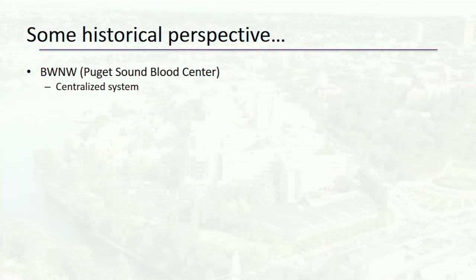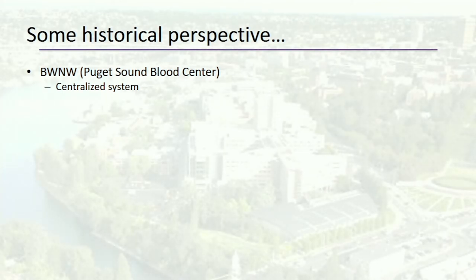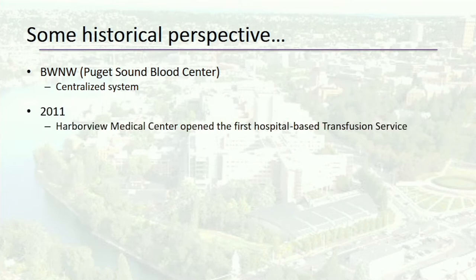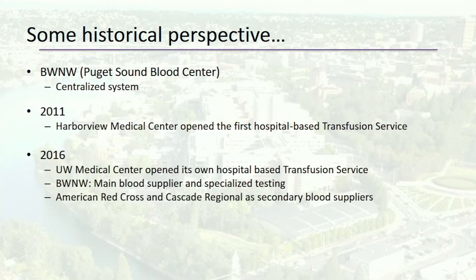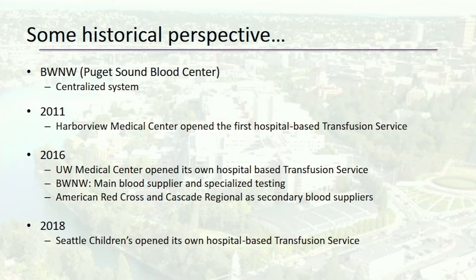Seattle's claim to fame was a centralized transfusion service known as the Puget Sound Blood Center, which was later rebranded as Bloodworks Northwest. In 2011, Harborview Medical Center was the first to splinter off with their own hospital-based transfusion service. Then in 2016, UW Medicine followed suit with our own transfusion service. And in 2018, Seattle Children's opened its own hospital-based transfusion service. So our transfusion service is actually relatively new — about two to three years old at this time.